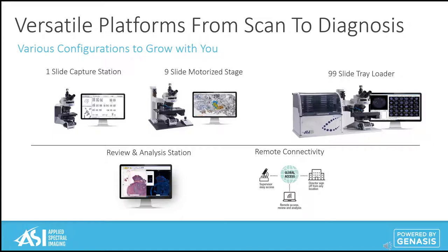We offer various configurations designed to scale with your business. Our base model starts with a single slide capture station to meet low volume demands. As volume increases, we offer a nine-slide motorized scanning platform. Slides are identified manually or automatically using a barcode reader, and once entered, the user walks away and can begin analysis as soon as the first slide is completed scanning. To meet the demands of high volume facilities, our 99-slide trailer pairs with the motorized stage, offering infinite and uninterrupted workflow. Once imaging is complete, ASI offers two options for review and analysis stations: physical or virtual. To meet the needs for remote access, ASI offers Genesis Anywhere, which gives companies the flexibility to allow employees to safely work off-site, contract out-of-state consultations, and reduce carrier expenses.